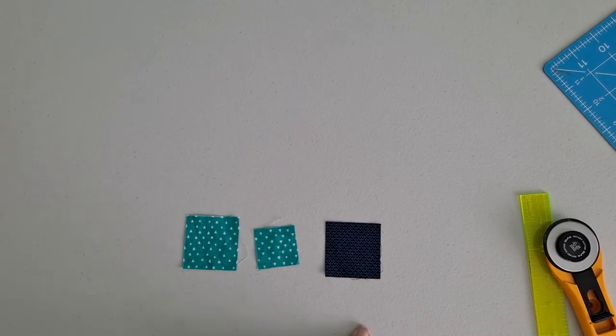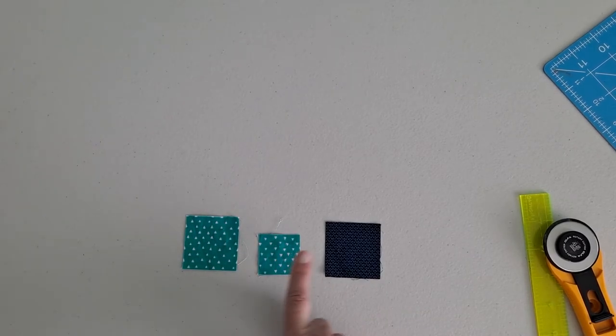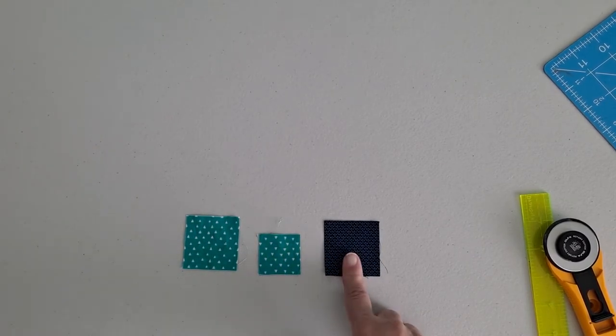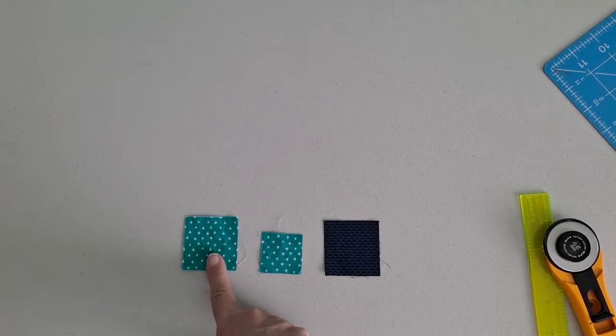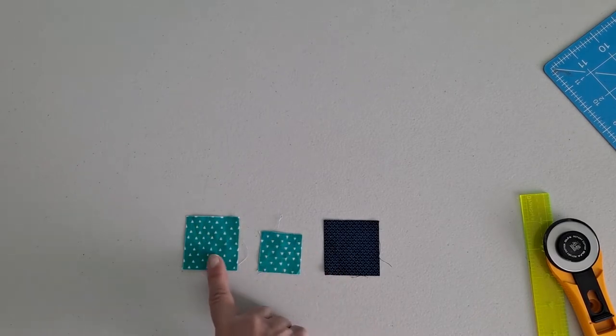This is a two inch square, this is a one and a half inch square, and this is a two inch square, and we need two of each of these to make our bow tie block.